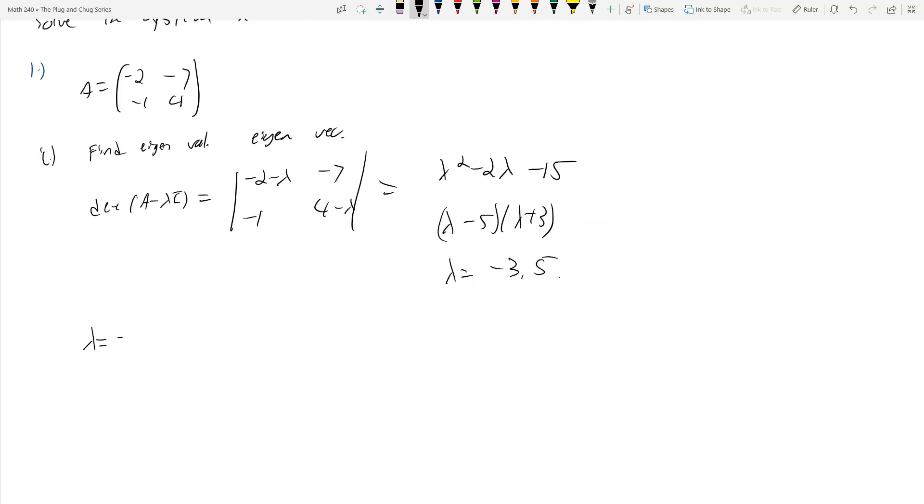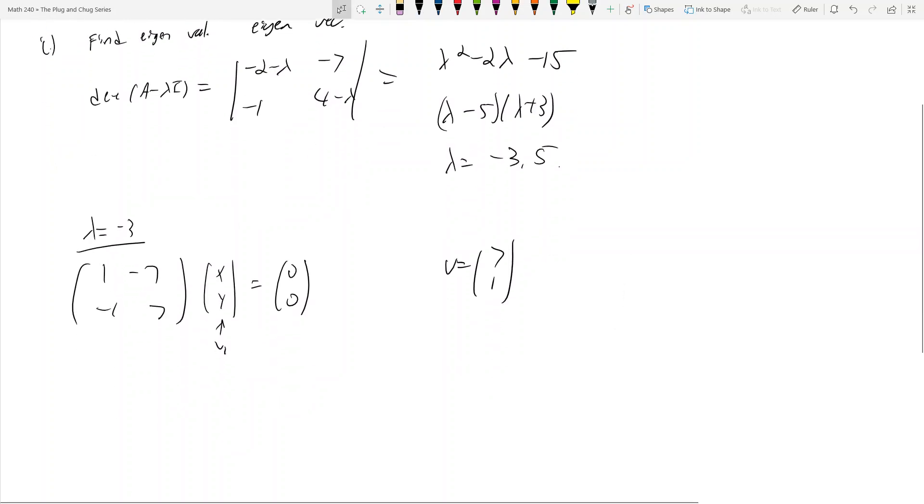Let's take a look at the λ = -3 case. If I add 3 to the diagonal, I get [1, -7; -1, 7]. We need to find the eigenvector. If you remember how to find eigenvectors, we need an (x, y) such that this equals (0, 0). We see that v₁ = (7, 1) works very well.